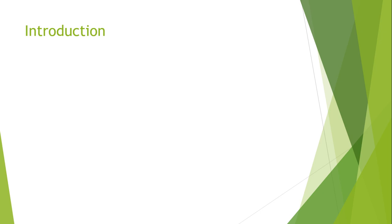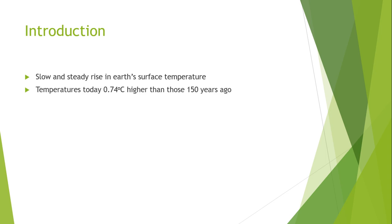Between the period of 1850 to 1900, due to human activities, primarily fossil fuel burning, greenhouse gas levels in the earth's atmosphere increased. Global warming is the slow and steady rise in the earth's surface temperature.